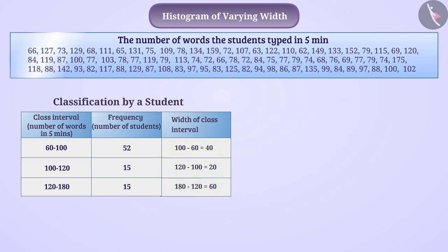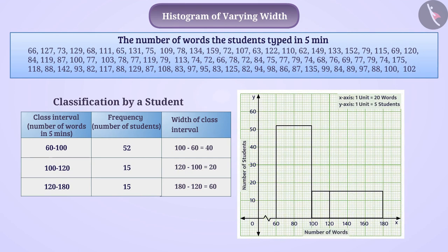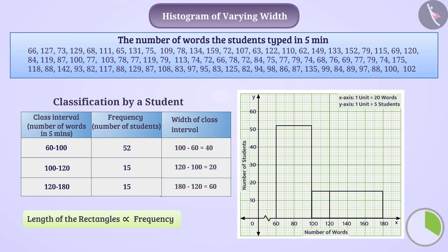In order to represent these figures, the student drew the histogram such that the length of rectangles to be drawn for class intervals was proportional to the frequency. Did he draw the correct histogram? Think, think. No, this is an incorrect histogram. Let's understand the reason for this.